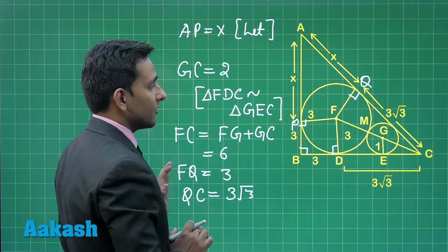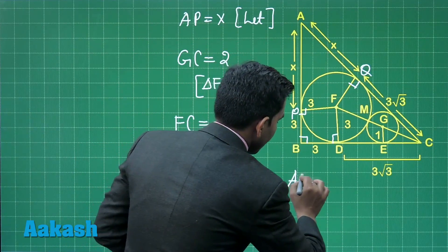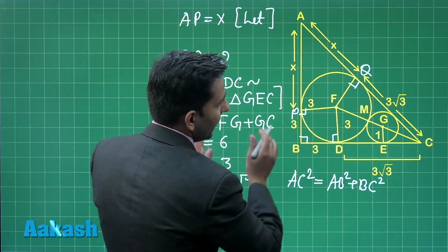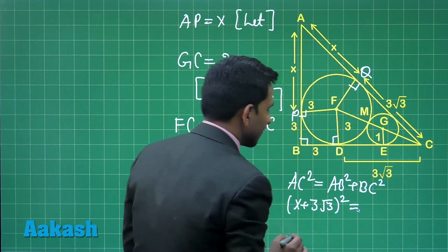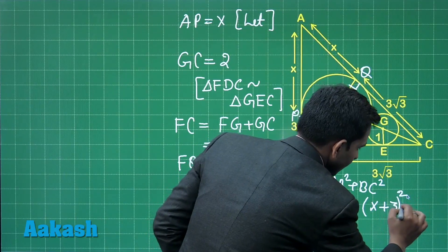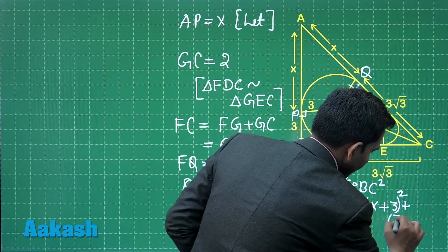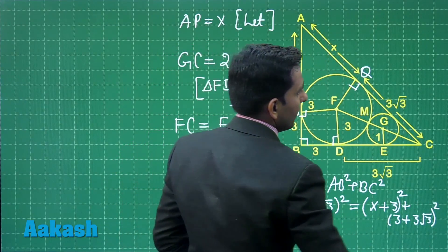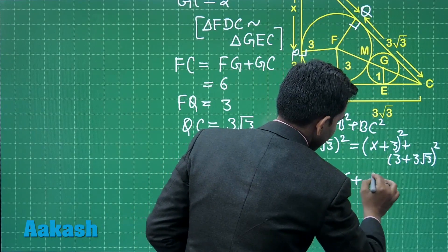Now we determine the length of x by applying the Pythagorean theorem in the complete triangle ABC: AC² = AB² + BC². Here AC equals x plus 3√3, so the left-hand side is (x + 3√3)², and AB equals x plus 3. When we further simplify this equation, we get the value of x equal to 6 plus 3√3.